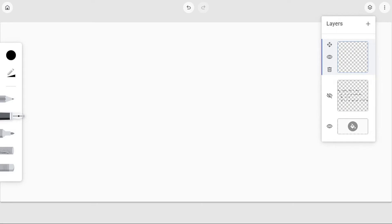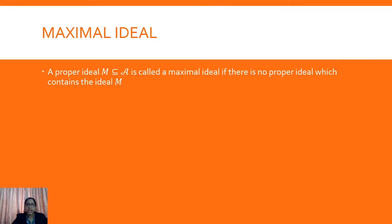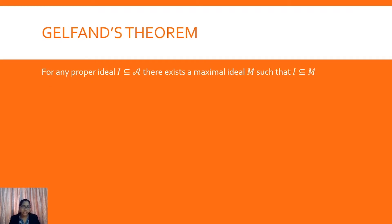Now we shall move on to the very important theorem of this lecture given by Gelfand. Gelfand's theorem states that for any proper ideal I contained in the Banach algebra, there exists a maximal ideal. That is, for any proper ideal we choose, we can always find a maximal ideal.